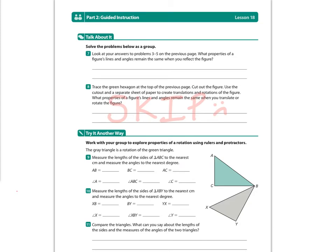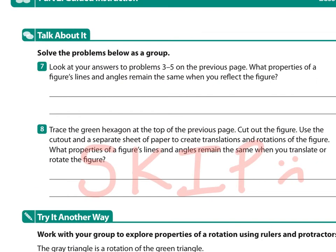And so here it says, question seven, look at your answers to problems three through five on the other page. What properties of figures, lines, and angles remain the same when you reflect it? Well, we know that the sides are the same length. We know the angles are the same. And if we had parallel lines, those stay parallel as well. So let's write all that in. So sides are the same, and we're talking about their length. All the angles are the same. And parallel lines are still going to be parallel.